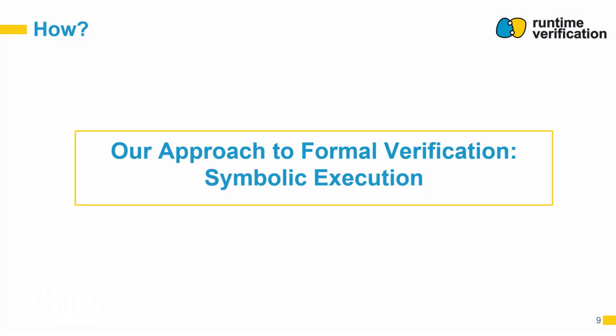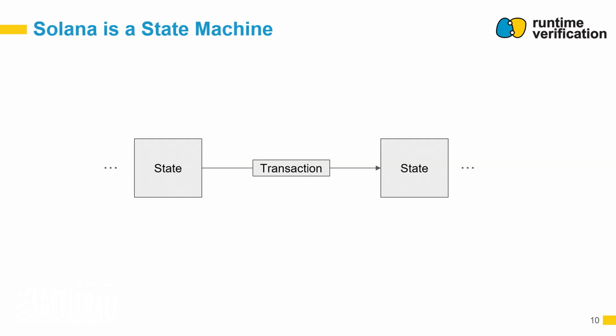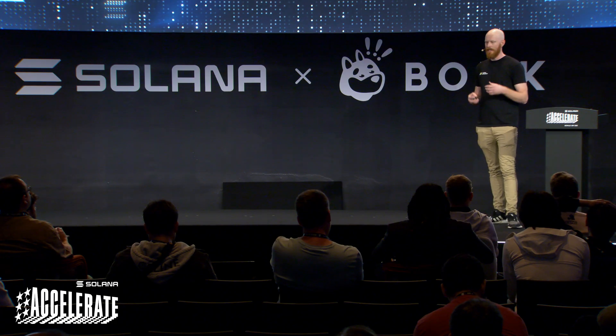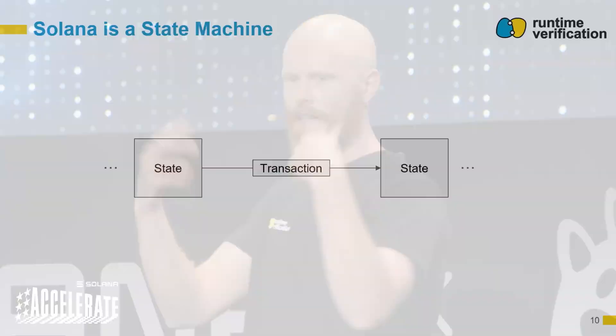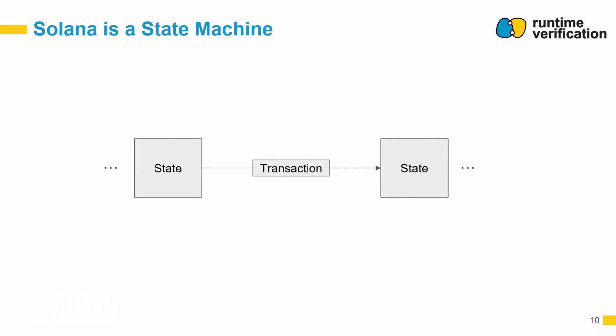Our approach to formal verification with Compass goes through symbolic execution. To explain that at a high level: Solana is a state machine on chain. There are accounts storing data, and that data gets manipulated into another state by a transaction which performs a state transition. This transaction has some inputs and there's some data already on chain, and smart contracts are just logic that processes how this data should move to the next state.